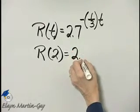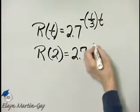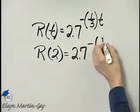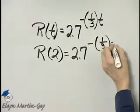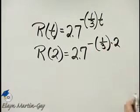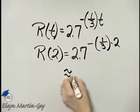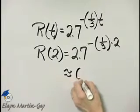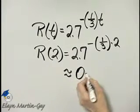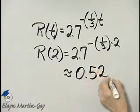We calculate 2.7 raised to the power of negative 1/3 times 2, and then round this to hundredths. If we round this to hundredths, we have 0.52.